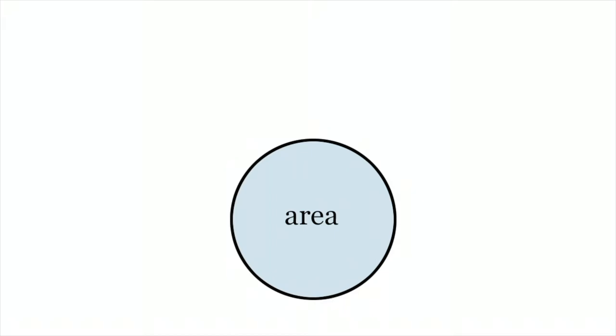Technically, a circle is just the line that forms the round shape, so the area is actually the area enclosed by the circle.